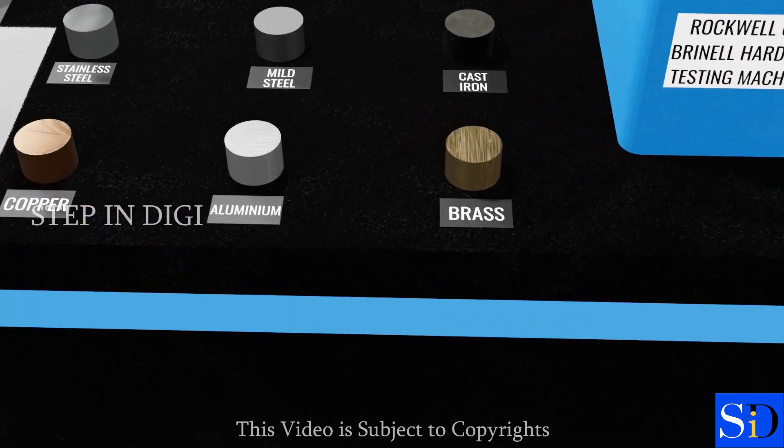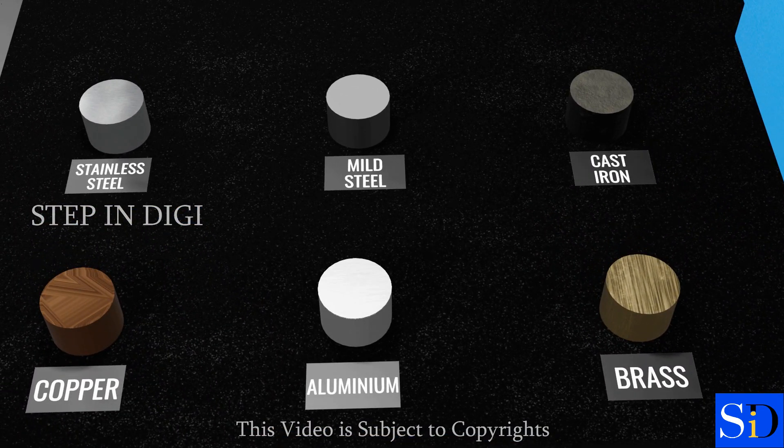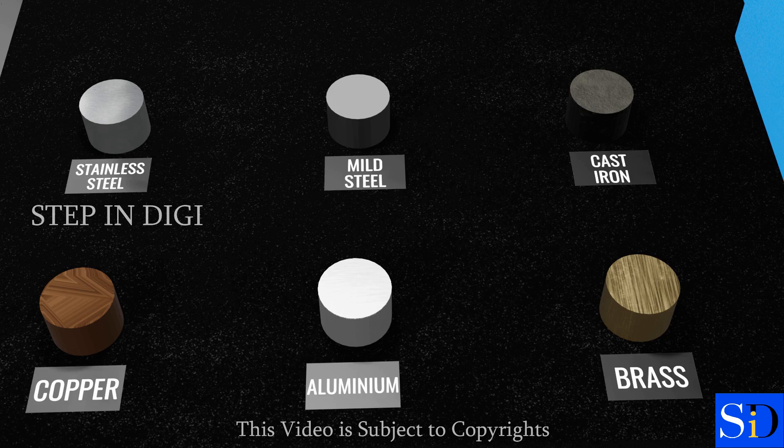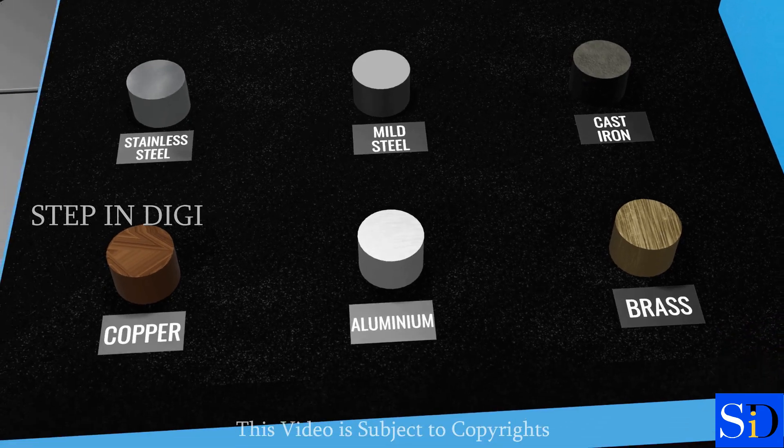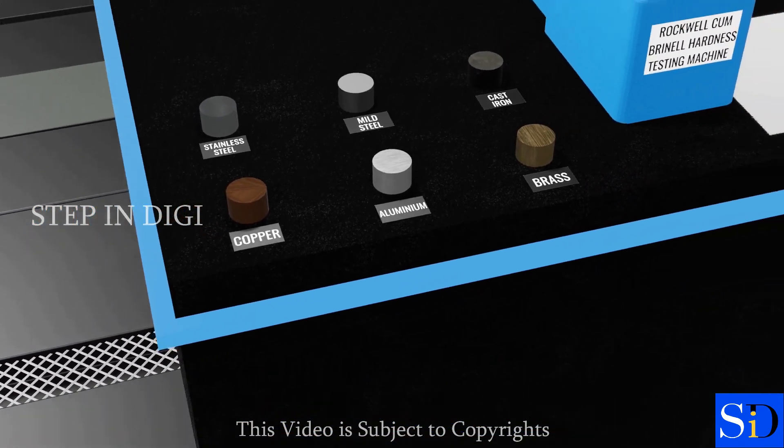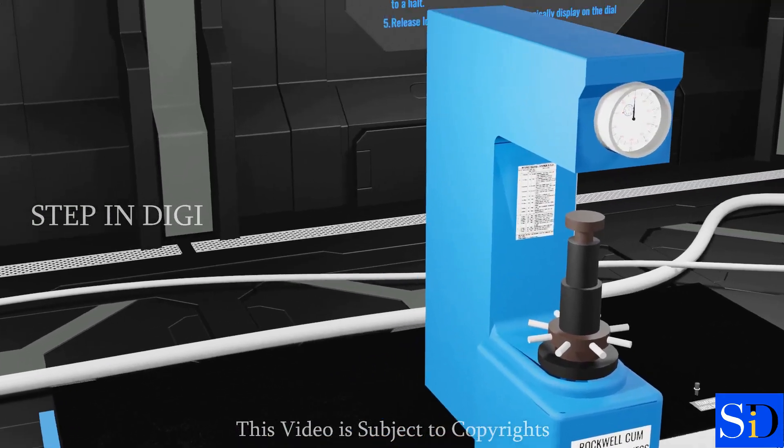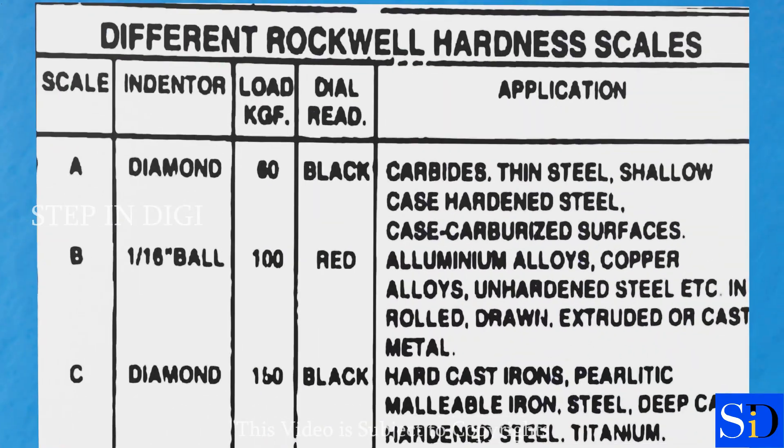The Rockwell hardness values for each material one by one. First, let us start with Aluminium. Before placing the test piece we have to fix the indenter on the machine. To find which indenter to use, let us look at the hardness scale given. Here, we can see that for aluminum, it's given as ball indenter with a load of 100 kgf.